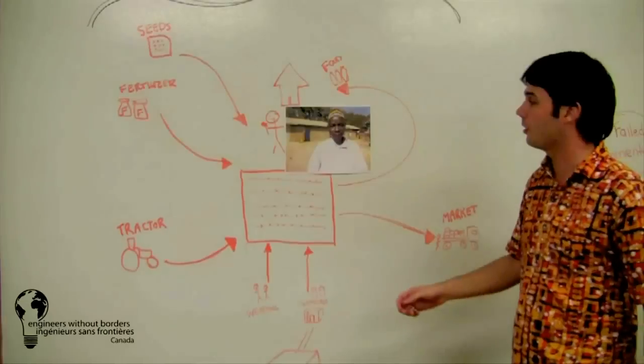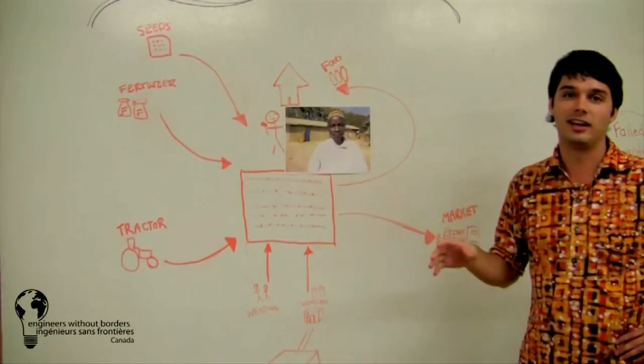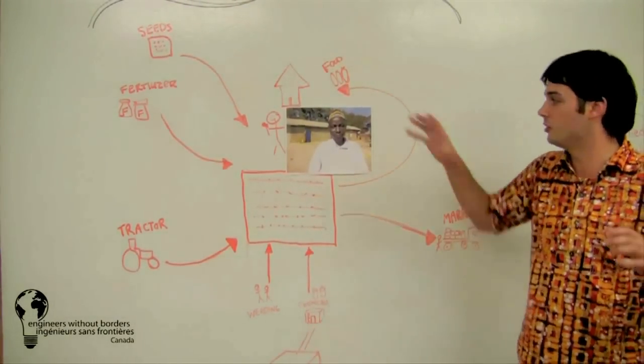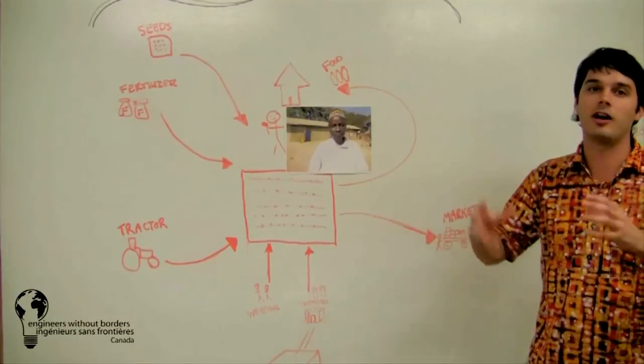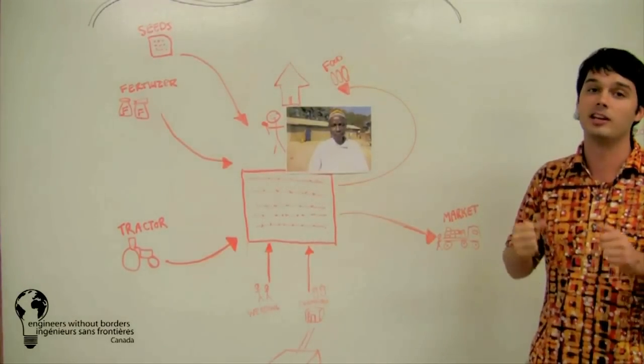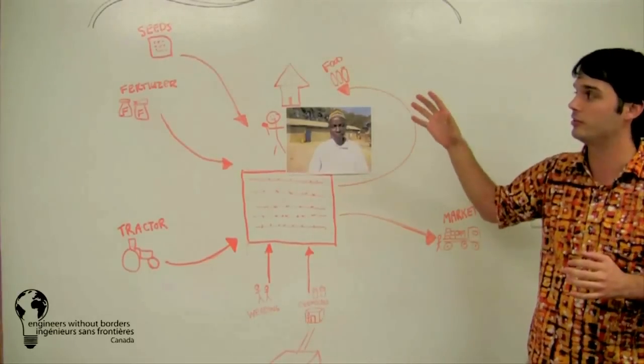Hussein is a small farmer in northern Ghana, and he's trying his best. But for Hussein to be successful, he needs a lot of different things to go right for him. He needs to interact with a lot of different businesses in the market system.